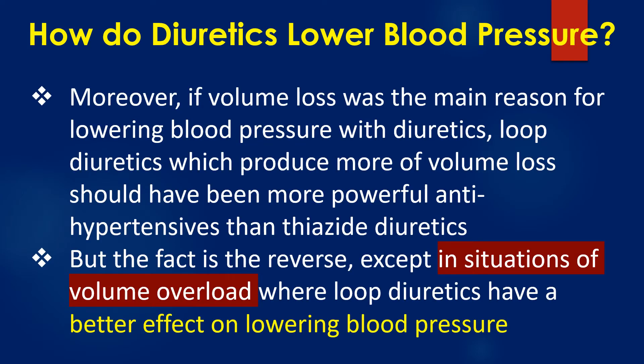Moreover, if volume loss was the main reason for lowering blood pressure with diuretics, loop diuretics — which produce more volume loss — should have been more powerful antihypertensives than thiazide diuretics. But the fact is the reverse, except in situations of volume overload where loop diuretics have a better effect on lowering blood pressure.